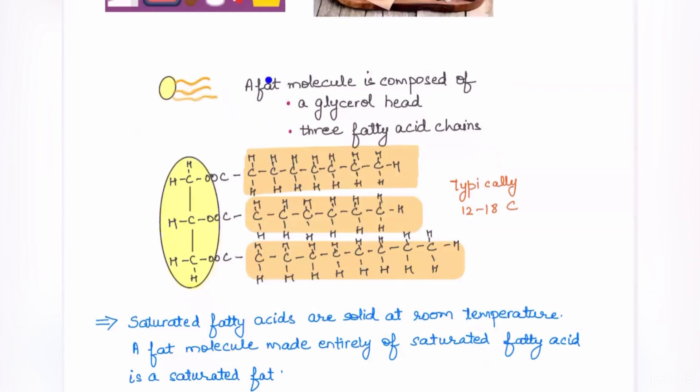So a fat molecule, when we talk about the storage fat, the most important one is triacylglycerol, also called triglyceride. A fat molecule is made up of a glycerol head. This is how a glycerol head looks like and three fatty acid chains. And these are the three fatty acid chains. Fatty acids are the monomers of fat and they have a carboxylic acid group. That's why we call them acid followed by a long hydrocarbon tail. And this hydrocarbon tail typically can be around 12 to 18 carbons.